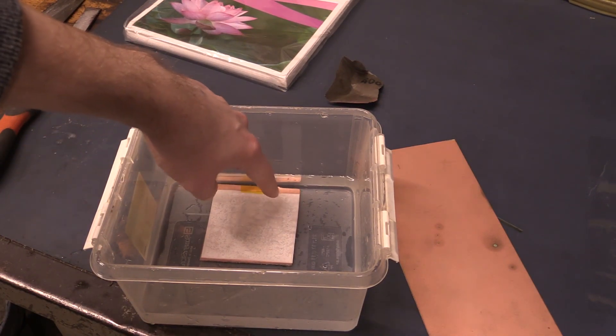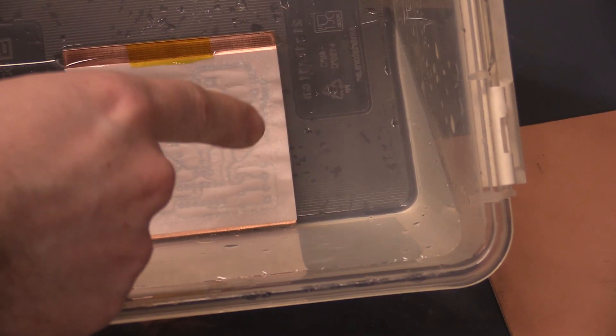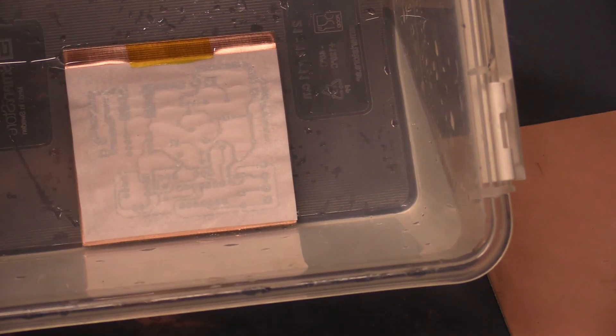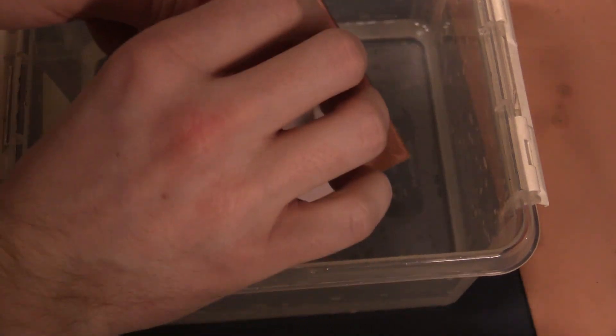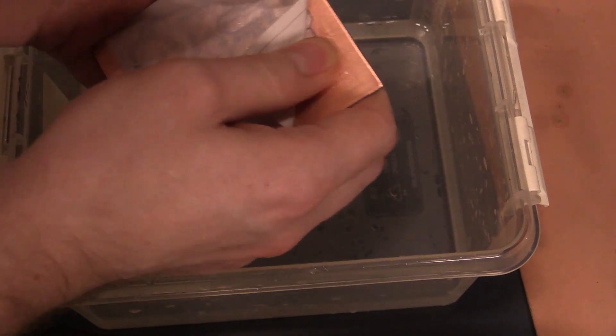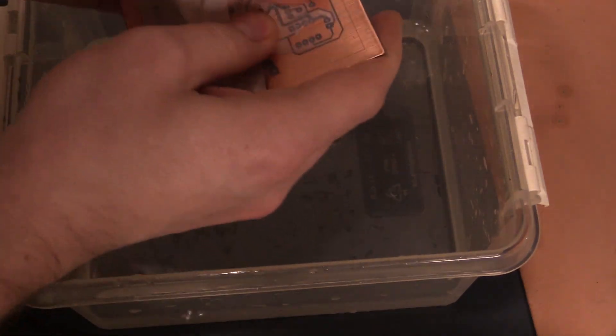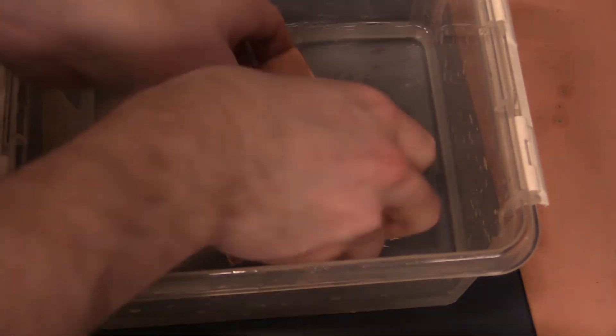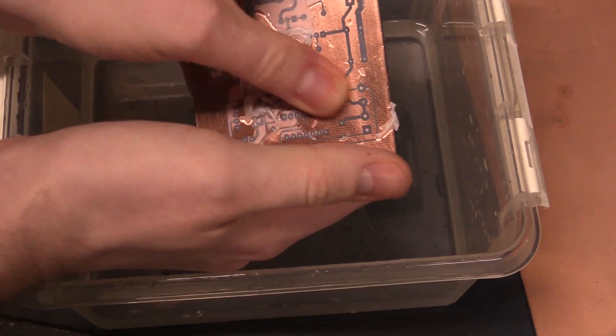You can see once the paper has turned all transparent and there's no solid white spots left, that's when it's ready to start peeling off the paper. You can see there's still some tiny spots around here, you just want to wait until all of those have become transparent as well. So I think that's mostly it. And you just peel off all the paper. If it's done correctly you don't really have to be that careful, you can just roll it off, just don't scrape it with your nails.